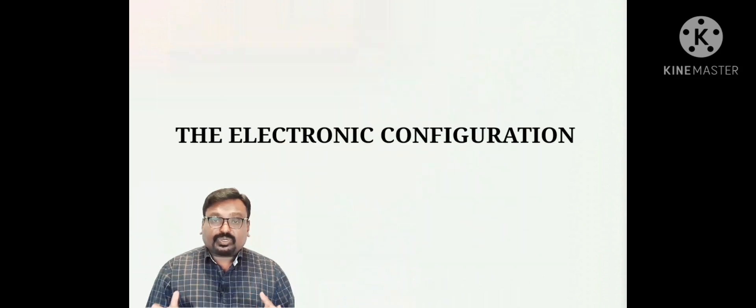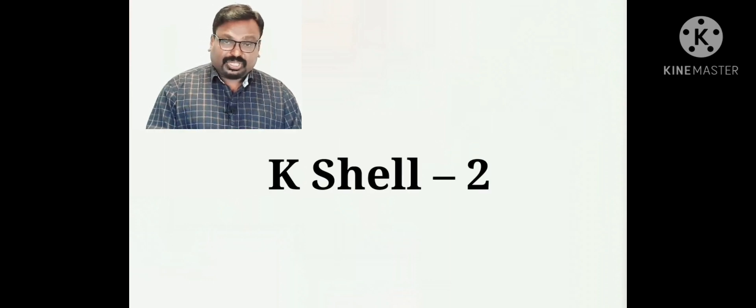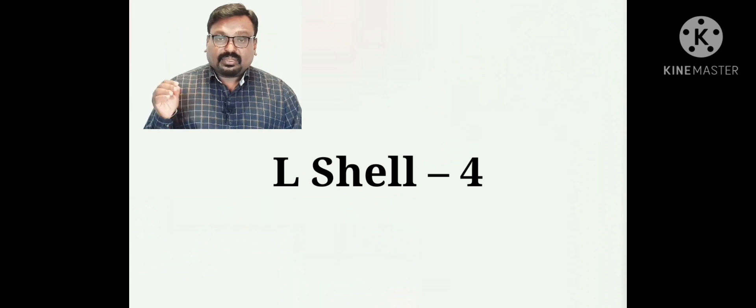Before going to know about the unique property of carbon, let us try to understand the electronic configuration and nature of carbon. We know that the atomic number of carbon is 6. If you write the electronic configuration, the configuration of carbon is 2, 4 — that means it has two electrons in the K shell and four electrons in the L shell.